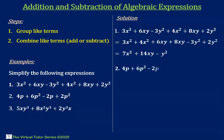Example 2: we are given 4p plus 6p squared minus 2p plus 2p squared. By grouping like terms we have 6p squared plus 2p squared, plus 4p minus 2p. Adding or subtracting like terms, we have 6p squared plus 2p squared equals 8p squared, and 4p minus 2p equals 2p.